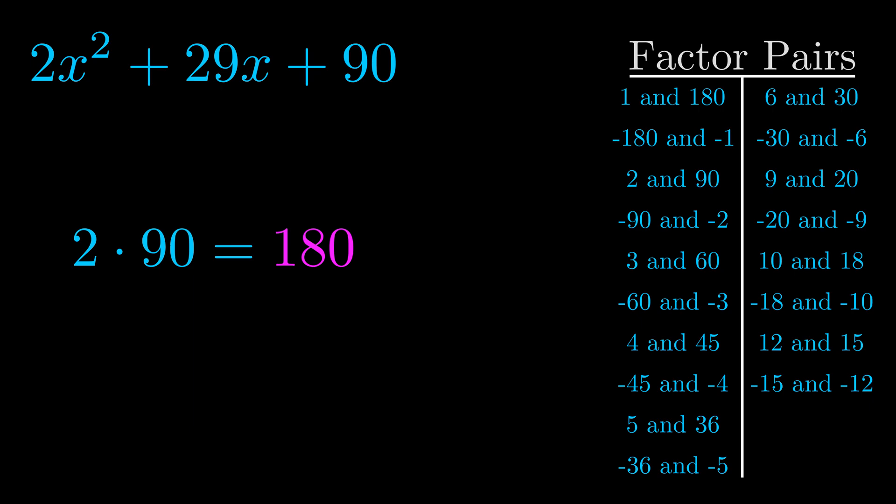The b value is the coefficient on the x term. That's the middle term, the one that we haven't done anything with yet. And really this is the only factor pair that we need.